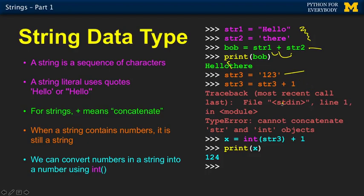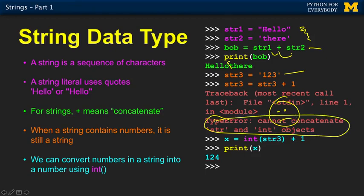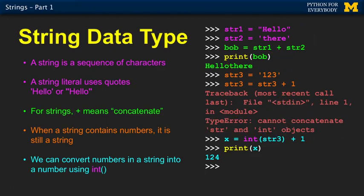Now we're going to try to add one to a digit string and it blows up. You're not even sad when you see a traceback by now — hopefully you're just like, traceback's a normal thing. Type error: can't concatenate strings — it's trying to tell you what's going on. We then take the string, pass it to the int function, and that comes back with 123, and we add one so it becomes 124. So it's all good. We've been doing that for a while.